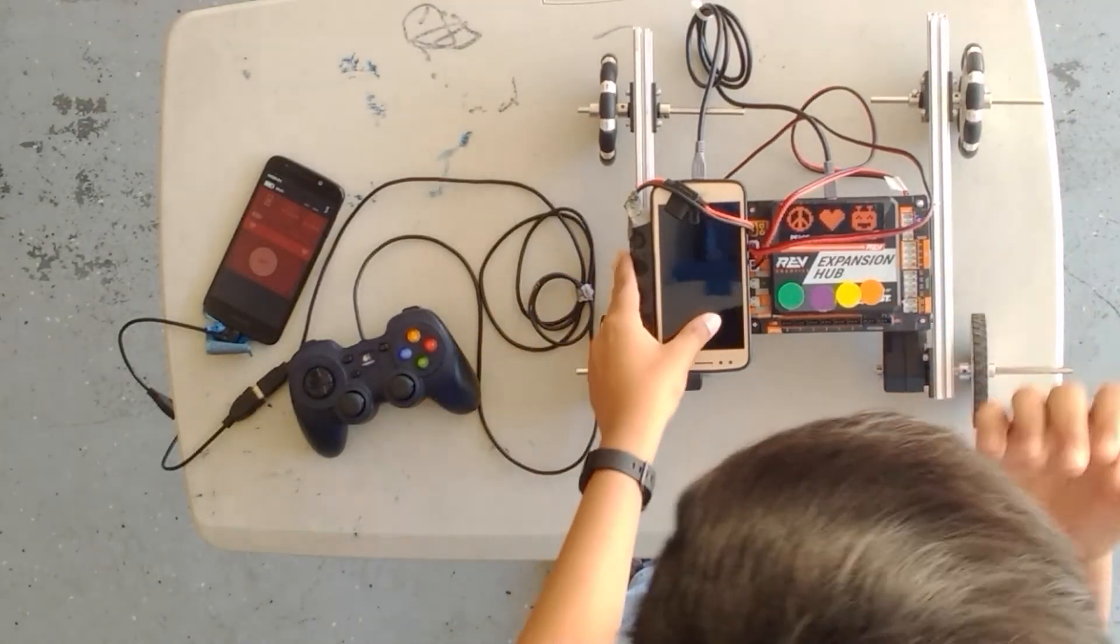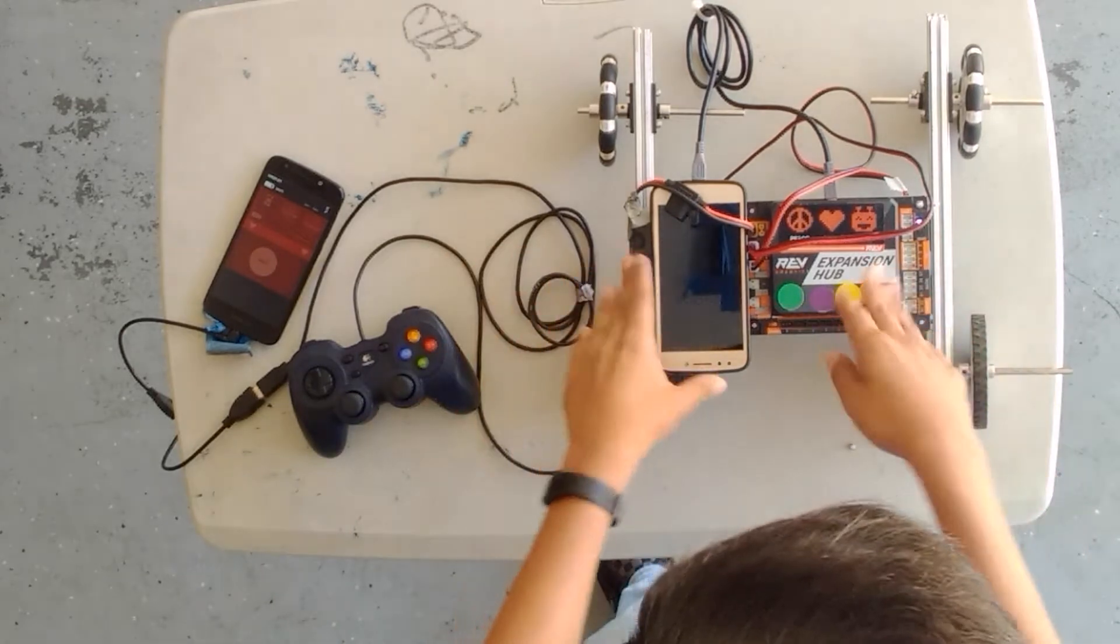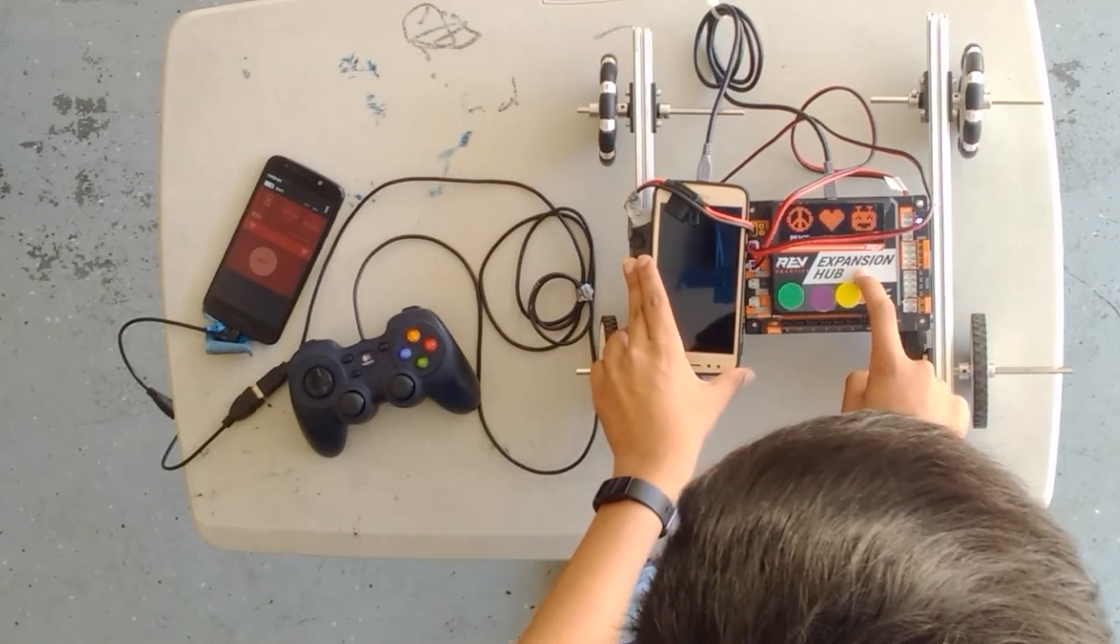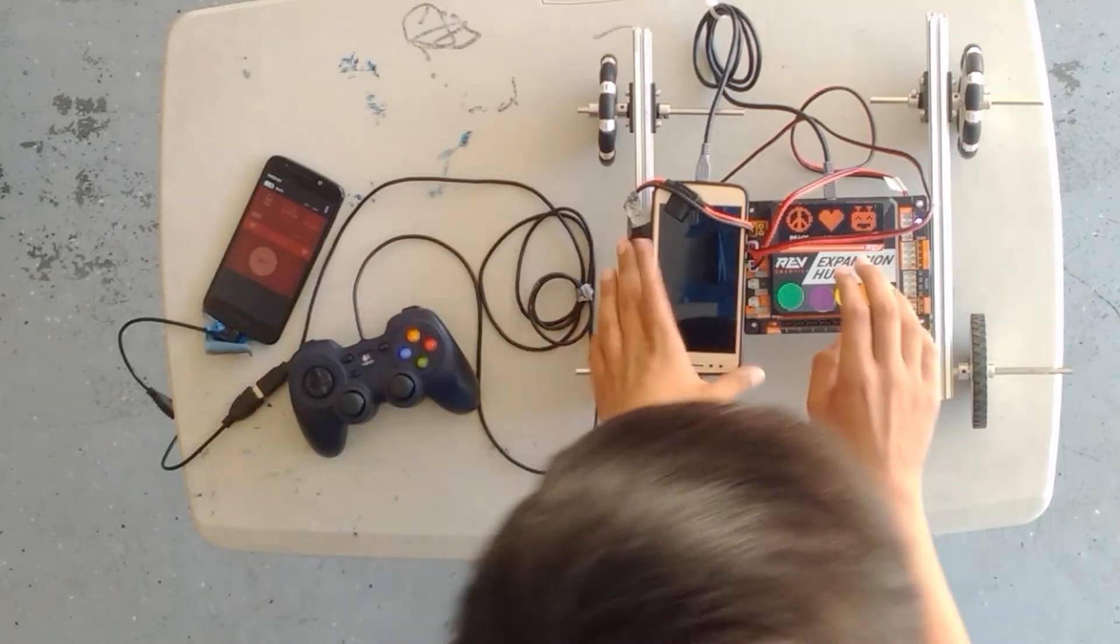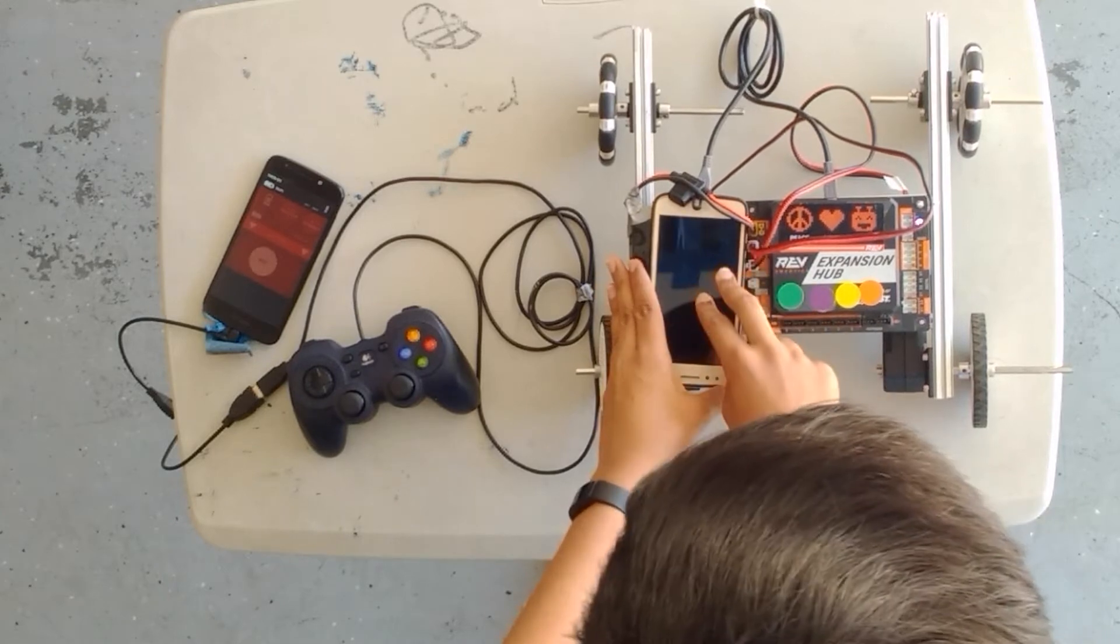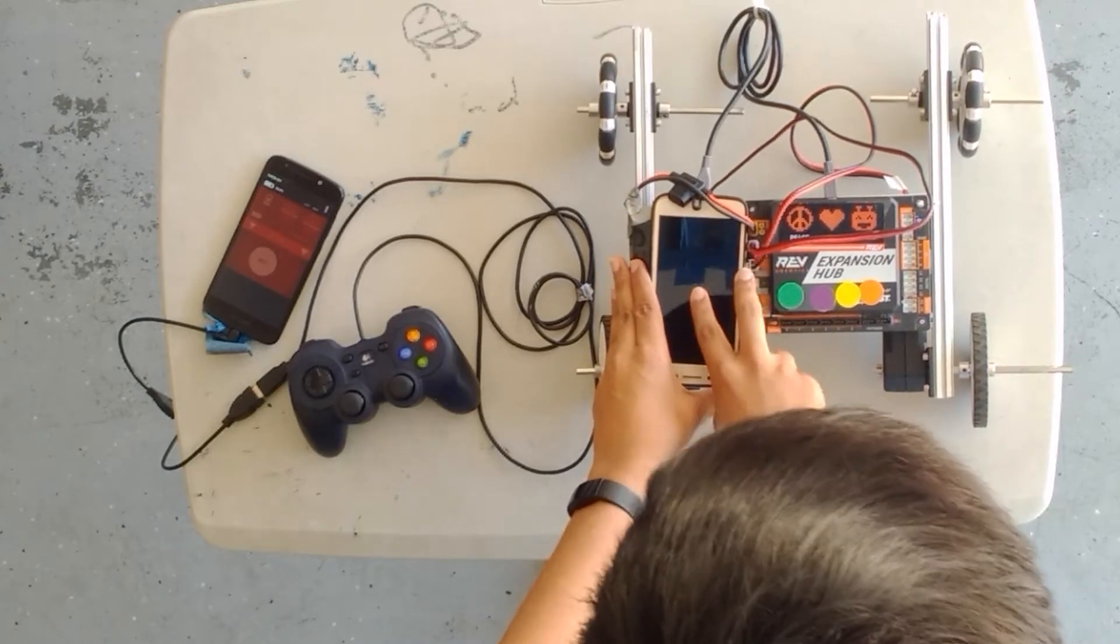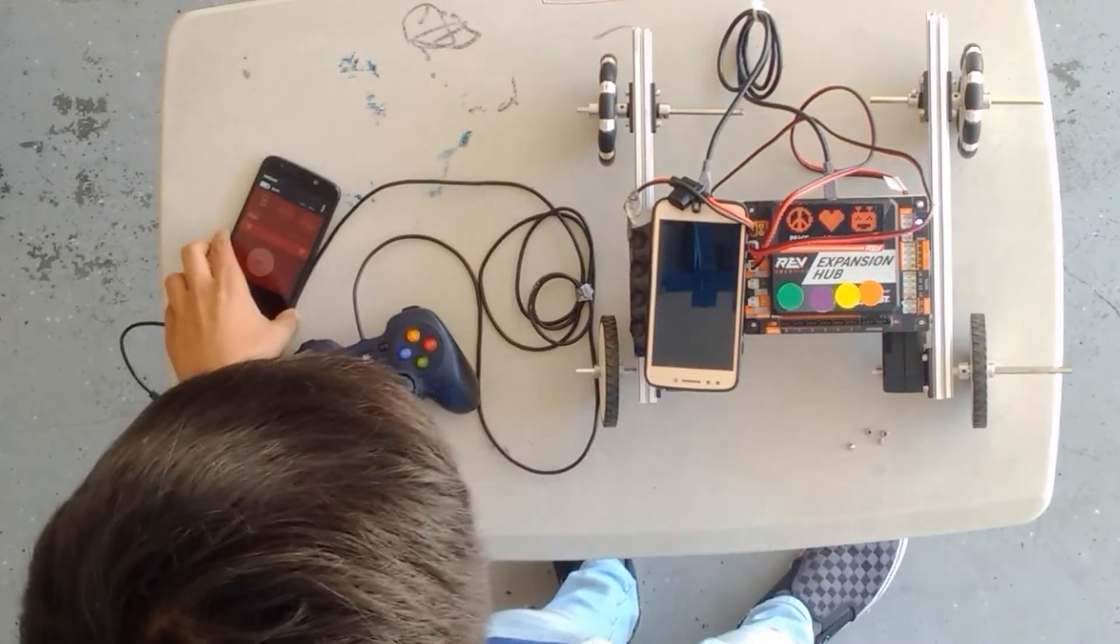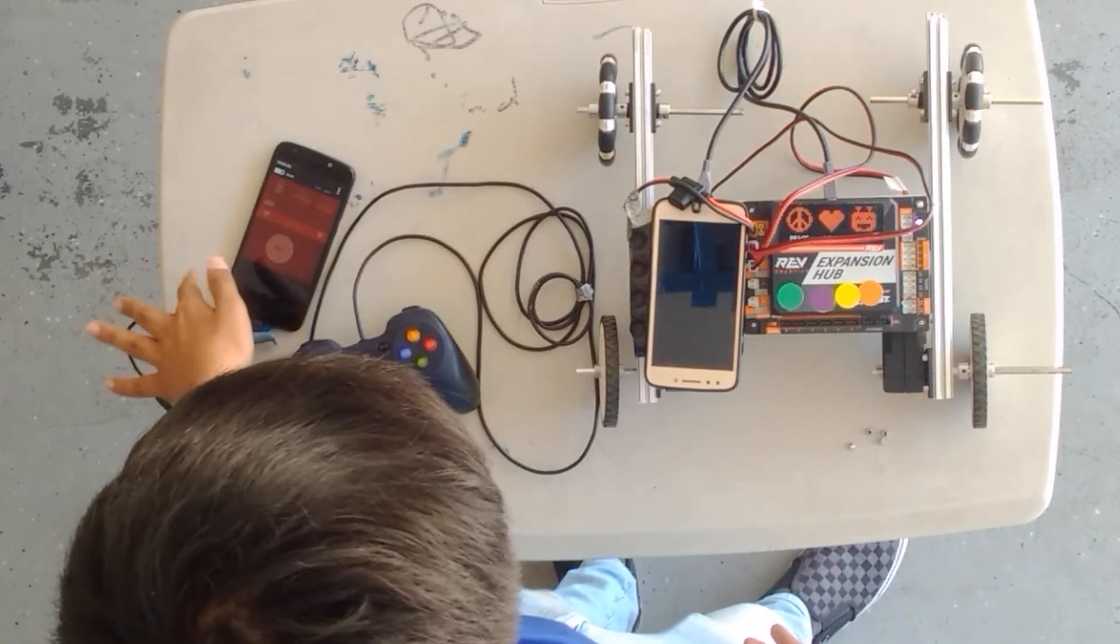This is the second way that you can set up your robot to control it. This way is going to use an expansion hub and two phones. With the expansion hub you're going to need this second phone which is what we call the robot controller and you're going to download your programs onto this phone which will then put it onto the expansion hub and the system with the driver controlling phone is exactly the same.